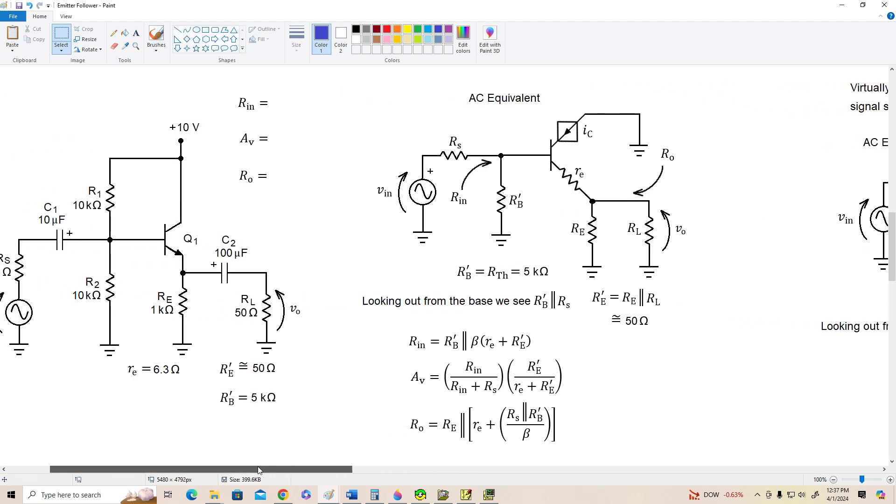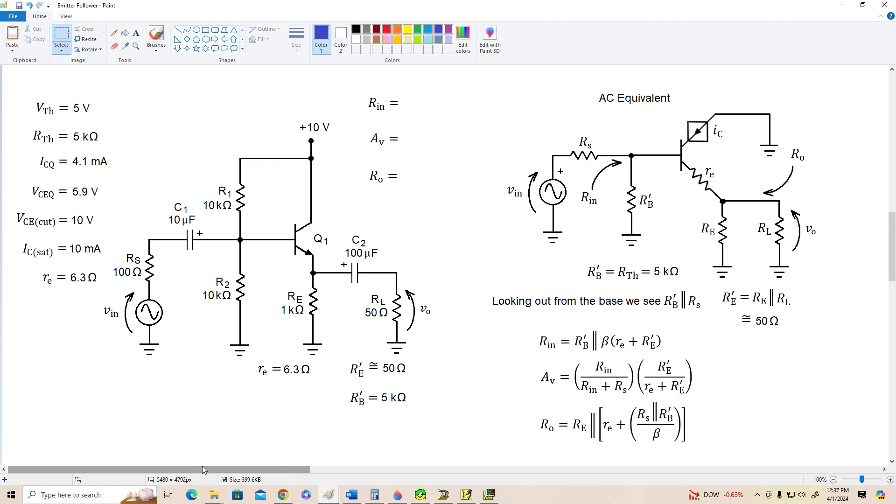Okay, so let's come over here and calculate the AC parameters for this amplifier. First of all, R prime E is 1,000 ohms in parallel with 50 ohms, which is pretty close to 50 ohms. The AC base resistance, R prime B, as we can see, is 5,000 ohms.